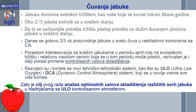U tu svrhu razvijeni su i koriste se novi tehničko-tehnološki sistemi kao što su ULO — Ultra Low Oxygen Kontrolisana Atmosfera — i DCA — Dynamic Control Atmosphere System, koji se u novije vreme sve više koriste. Zato je kao cilj ovog rada postavljena analiza optimalnih uslova skladištenja različitih sorti jabuka u hladnjačama sa ULO kontrolisanom atmosferom.